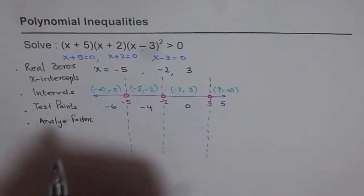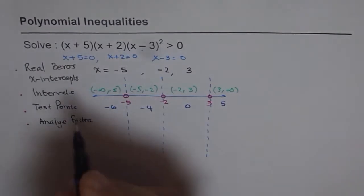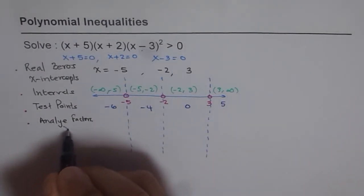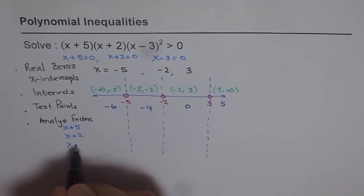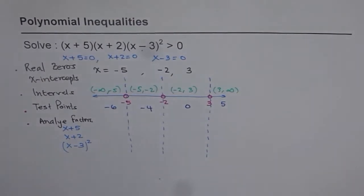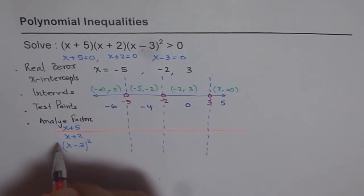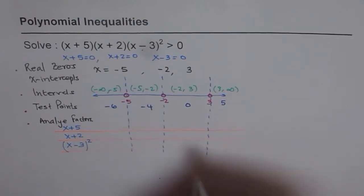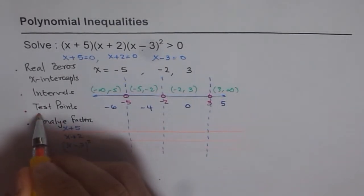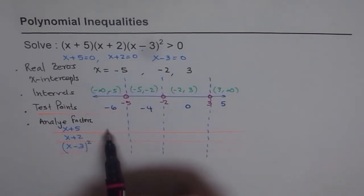So what we'll do is we've got these three factors here. So I'll write down all my factors. So I'm saying analyze factors. So that is my next step. So my factors are x plus 5, this is my first factor. The next one is x plus 2. And the third one is x minus 3 whole square. So these are my factors. Now I'll just draw some horizontal lines so that we don't really get confused. So what we will do here is, for each factor, we will check the sign.